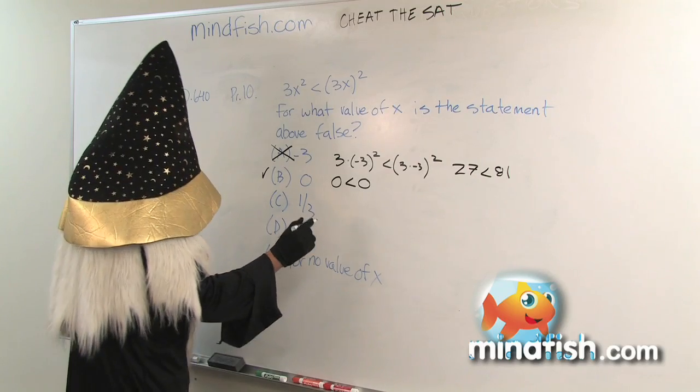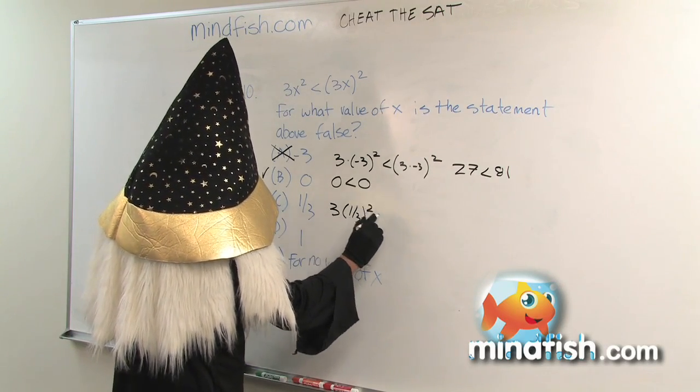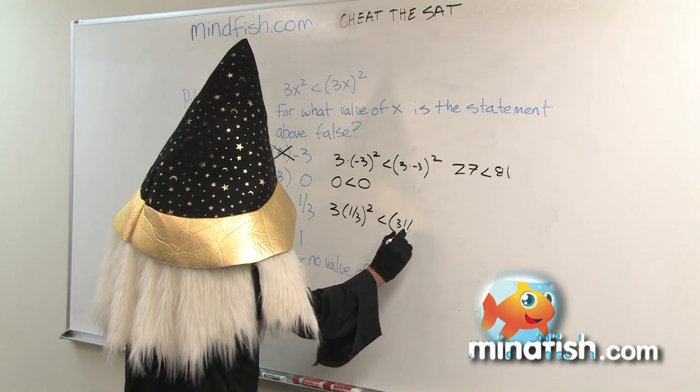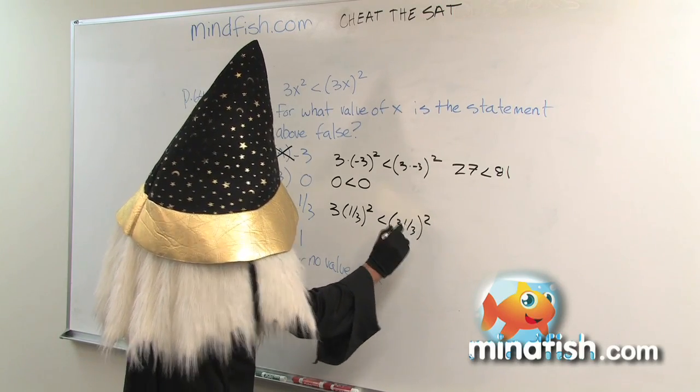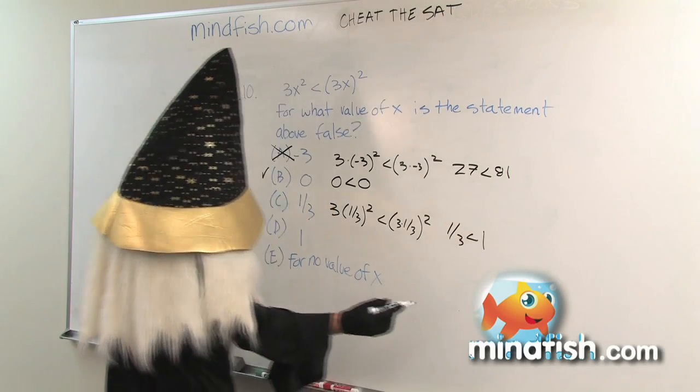I'm just going to keep checking them to make sure. We put in 1/3, we're going to get 3 times (1/3)² is less than (3 times 1/3)², which is going to be 1/3 is less than 1. That's true.